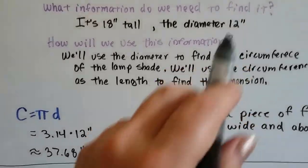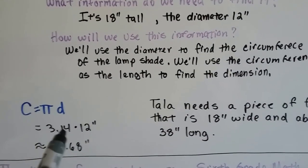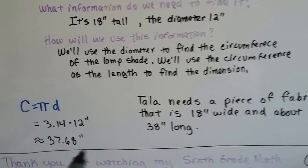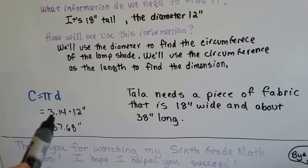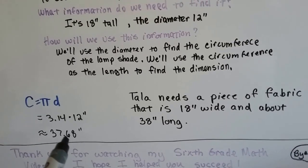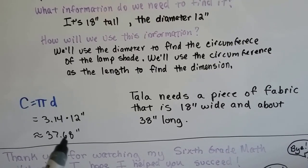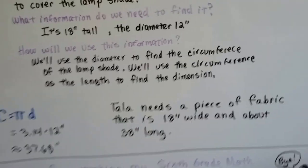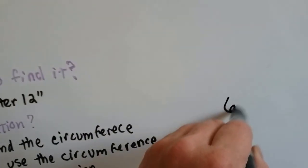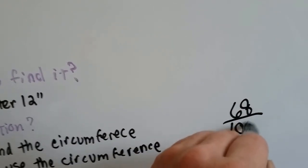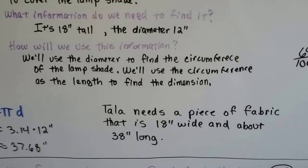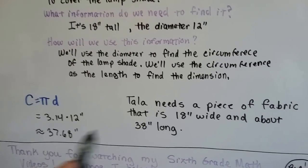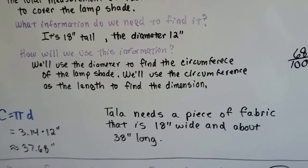We know the diameter is 12. So we multiply 3.14 times 12 and we get 37.68. So we're going to round this off because we used pi. We know it's approximately 37.68. This is 37 and 68 hundredths of an inch. 68 hundredths of an inch is pretty tiny. So I rounded it off to 38 inches because she's using fabric and she probably even needs to overlap a little bit on the seam.